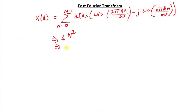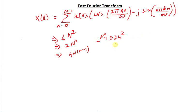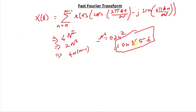It requires 2N² multiplications and finally 4N(N−1) additions. For a typical sequence that may have something like 1024 points, the value of N² is 1024 squared — which comes out to be 1,048,576. This is a pretty big number, and it makes no sense to have a computer do so much multiplication again and again. So we need a more efficient algorithm.